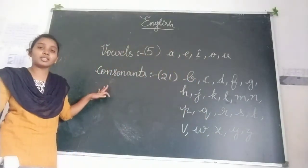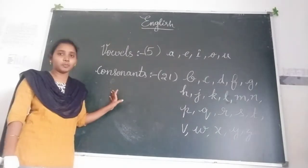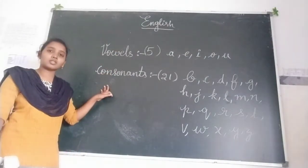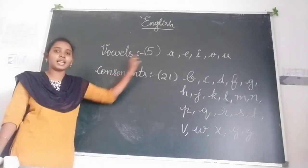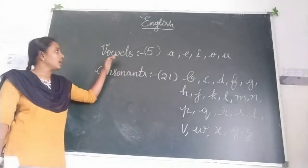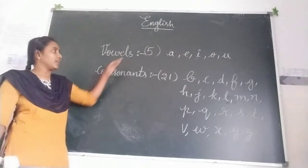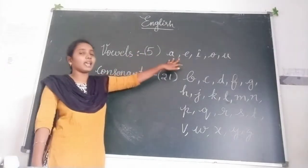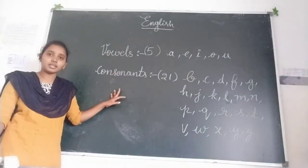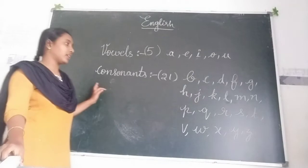Okay children, based on the English alphabet, the alphabet is divided into two parts — vowels and consonants. There are five vowels and 21 consonants. Write them one by one: A, E, I, O, U are the vowels and the remaining are the consonants. Everyone should write a note children.